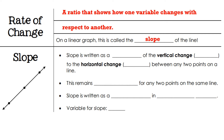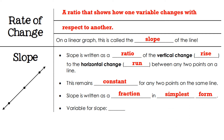The slope is written as a ratio — it's a vertical change called your rise and a horizontal change called your run, between any two points on a line. This remains constant for any two points on the same line. Slope is written as a fraction in simplest form — no mixed numbers. It can also be a whole number, but remember every whole number has a denominator of one. For example, a slope of two is actually two over one. The variable we use for slope is m.